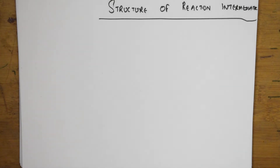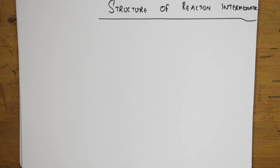Welcome back students. In the previous video we have seen how to prepare reaction intermediates — carbonium ion, carbocation, free radicals, nitrenes, and carbenes. Now let's come back and study the structure of these reaction intermediates.